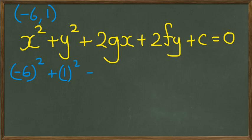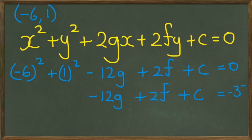actually, that's 2 times negative 6, which would be negative 12g plus 2f plus c equals 0. So this would be negative 12g plus 2f plus c equals negative 37.